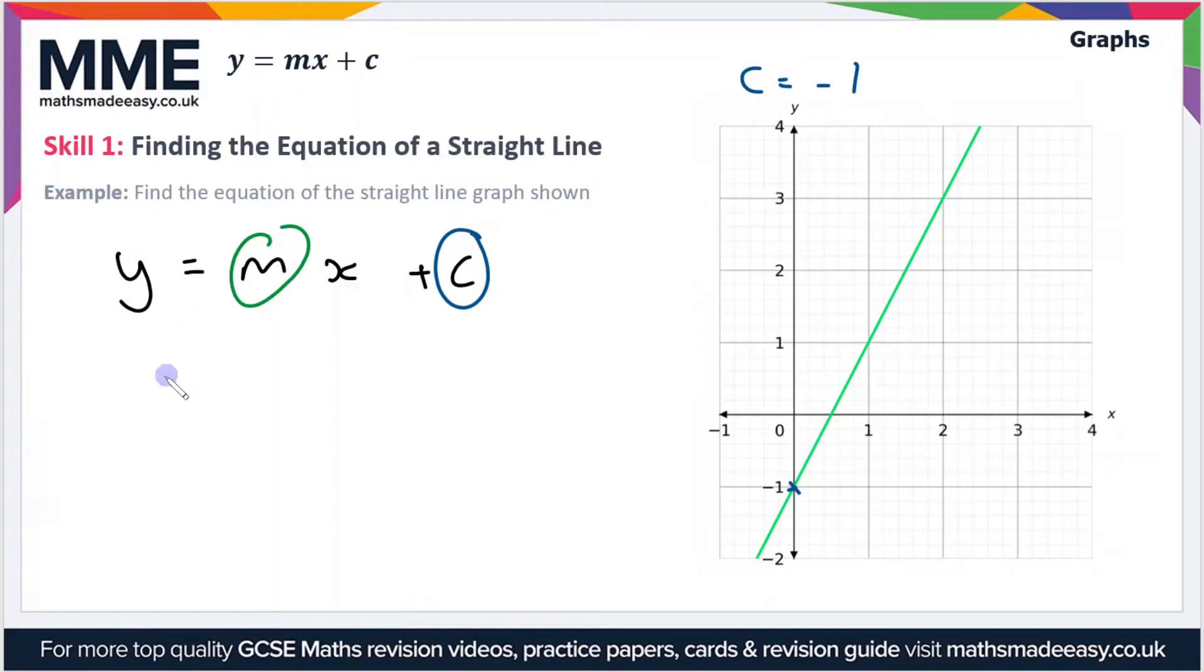Now if we move on to look at the gradient which is m. So m is the change in y value divided by the change in x value. So here I've got two points on the line. We've got the point two three and we've got the point zero negative one.